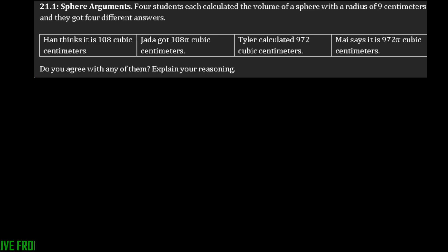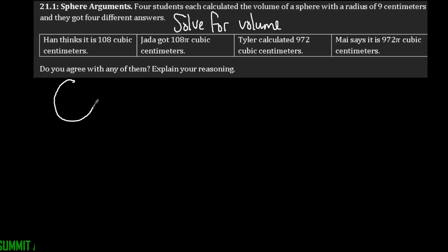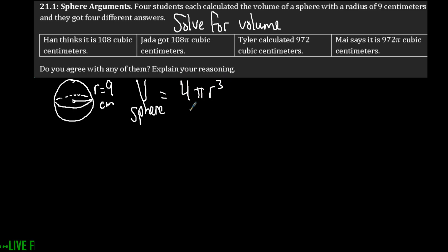We need to solve for the volume. Let's trace out that sphere — graph it out with a dashed line in the back. Our radius goes from the center to the edge, so r equals nine centimeters. The formula for the volume of a sphere is V equals four times pi times the radius cubed over three.